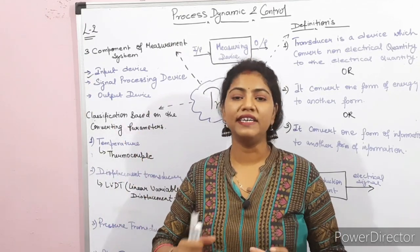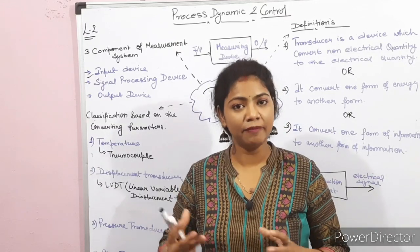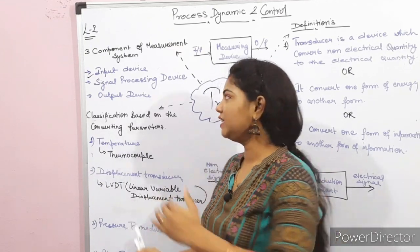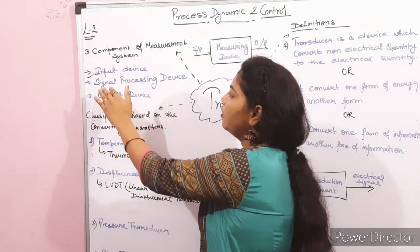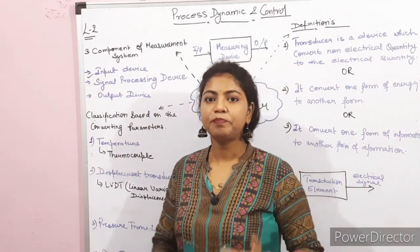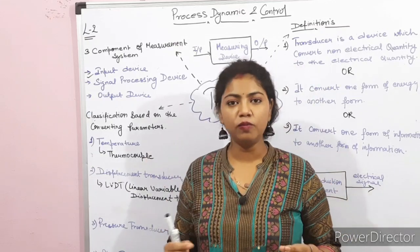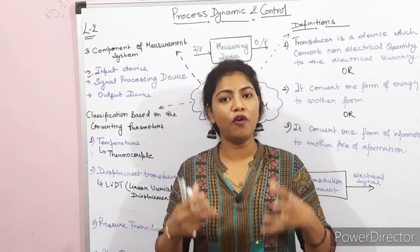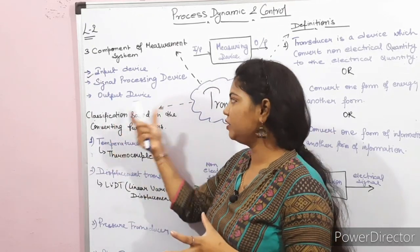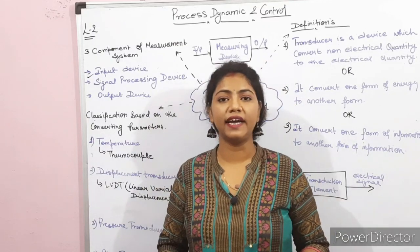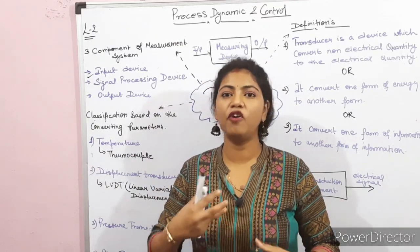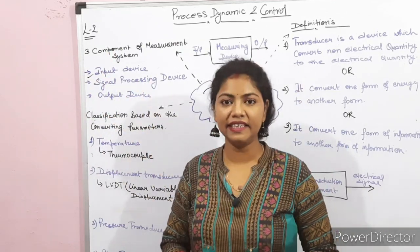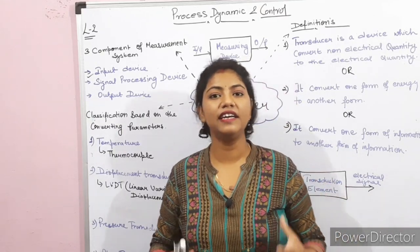The signal processing device can amplify the signal, moderate it, or filter it — all of this is called signal conditioning and is handled by the signal processing device. Next is the output device, where the processed signal is received in a particular required format. Basically, the output device presents the result in the required format. These three components together make up the measuring device and measuring system.